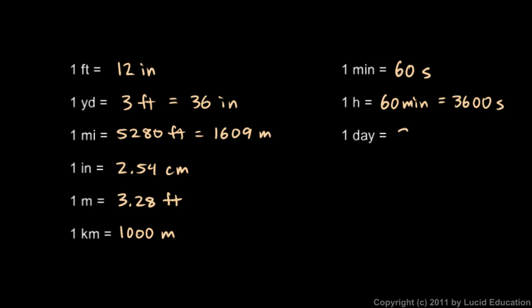And 1 day is 24 hours, and that equals 1,440 minutes, which equals 86,400 seconds. So 1 day is 86,400 seconds.